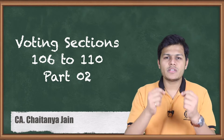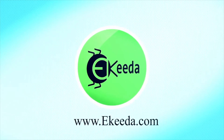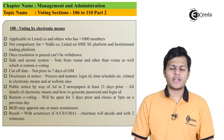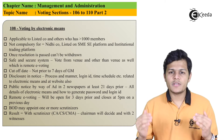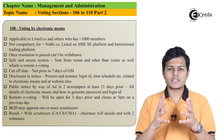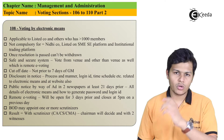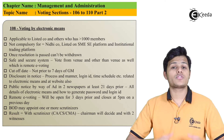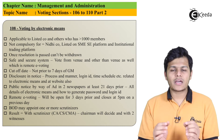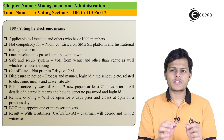क्या हर कंपनी electronic means के through voting कर सकती है? आज के time में जितनी भी companies की meetings होती हैं - चाहे वे listed companies हों, unlisted companies हों, private companies हों या public companies हों - उन सभी meetings में सबसे important चीज़ यह है कि जितने भी members होते हैं उन सब को gather करके meeting कैसे की जाए। Meetings कितने type की होती हैं, हम already देख चुके हैं: shareholders की general meeting, board of directors की board meeting, और specific class meetings जैसे creditors या preference shareholders की।